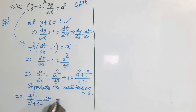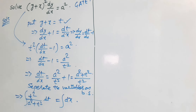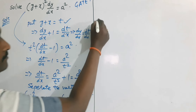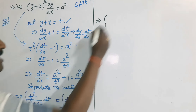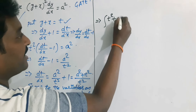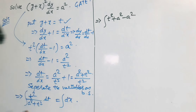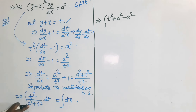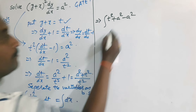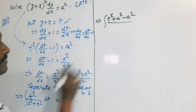Taking integration on both sides. The challenging term is integrating t²/(a² + t²). Since the denominator has a² + t² but the numerator has only t², I write the numerator as t² + a² − a², that is, adding and subtracting a².